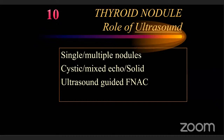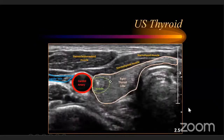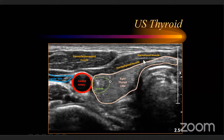On ultrasound, a high-frequency probe allows visualization of the trachea, with the isthmus and thyroid in front of it, the pre-thyroid muscles anterior to the thyroid, and the carotid vessels laterally. Ultrasound is a sensitive tool — it will detect multiple nodules not palpable by hand. It can also guide fine needle aspiration cytology for tissue diagnosis.